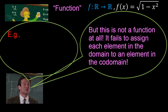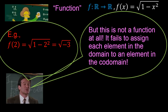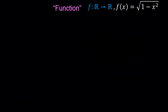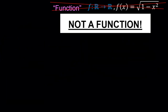For example, if we take the element 2 from the domain — and 2 is certainly in the domain because it's a real number — and we apply the function f to the number 2, what we get in return is the square root of 1 minus 2 squared, which is the square root of negative 3. However, the square root of negative 3 is not a real number, so it's not in the co-domain at all. So what we have here is not a function at all.